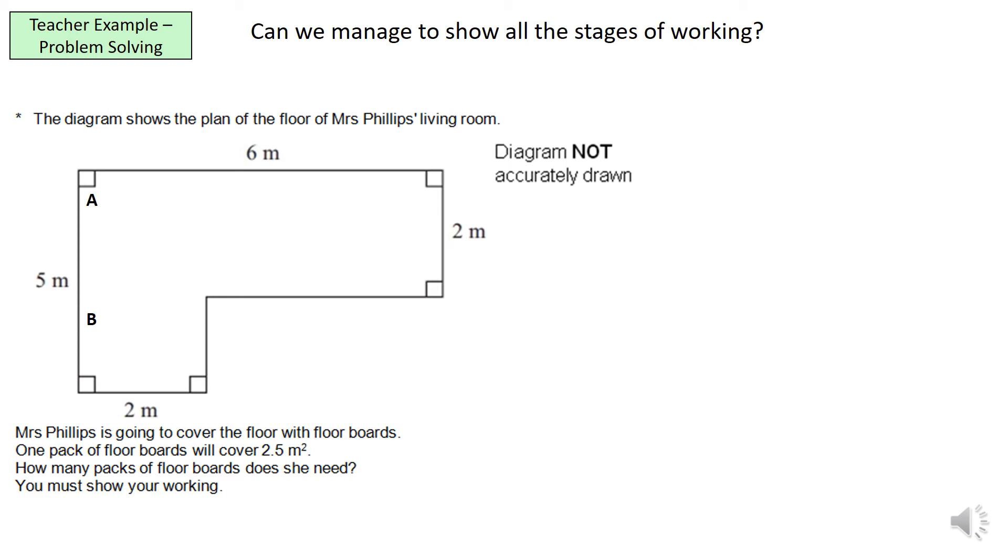So, going on to the difficult part, the main part of the lesson, my example, what I want you guys to do is read the question. First of all, Mrs. Phillips is going to cover the floor with floorboards. One pack will cover 2.5 m2. How many packs of floorboards does she need? So, the first step, we need to work out the area of Mrs. Phillips' living room. And in order to do that, I've split the shape in two and I've called them A and B. So, I've created two shapes within it. And we know that the area of shape A is 6 times 2, which is 12 meters squared. Now, for B, what we need to understand is that it is 3 meters, not 5 times 2, it's 3 times 2, because we only need that little section where the split has been done. And if we add those two together, 12 plus 6, that will give us 18 meters squared. That is the total area of Mrs. Phillips' living room.